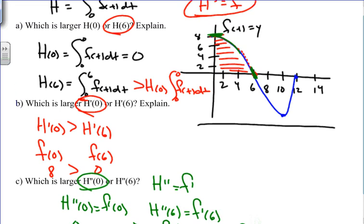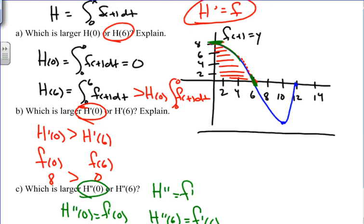To summarize, we used integrals, the Fundamental Theorem of Calculus, and the graph to understand how they relate to the original function h. The key strategy is to look at the graph, identify the function, and express things in terms of h by recognizing that h' equals f and h'' equals f'. This makes solving these comparison problems much more efficient and accurate. Good luck and God bless on the rest of your math classes.